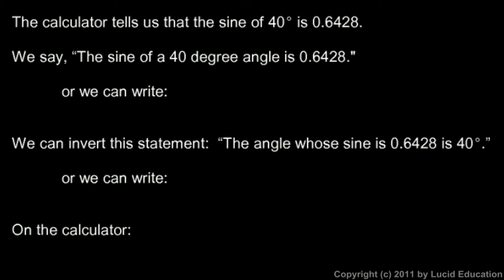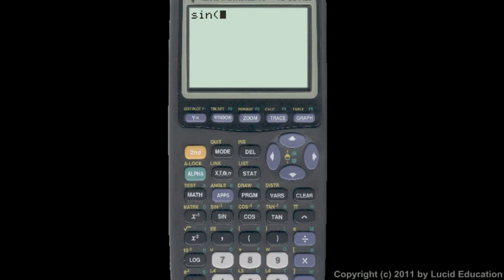The calculator tells us that the sine of a 40 degree angle is 0.6428. Let's take a look at that. Here's the calculator, and if we type in sine of 40, it tells us 0.6428. Really, 0.6427876097. And those digits would go on and on, but rounded to four decimal places, 0.6428.